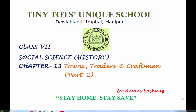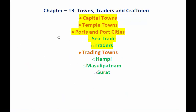Today we continue with Chapter 13 from Social Science History. In the previous class we discussed capital towns, temple towns, ports and port cities, sea trade and traders. Today we will continue with some of the trading towns such as Hampi, Masulipatnam, and Surat.